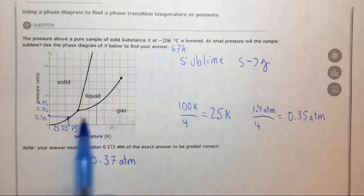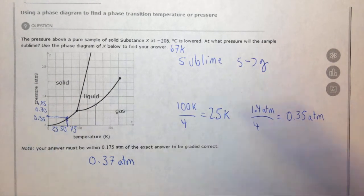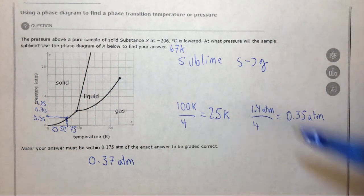This is much easier on the computer because you have a cursor where you can put it exactly at that spot and read it over. But it's very important that you figure out the values on the axes before you do that.